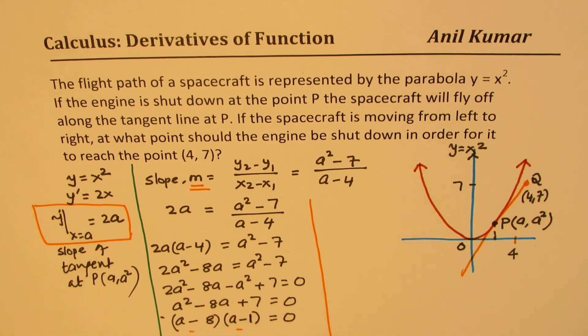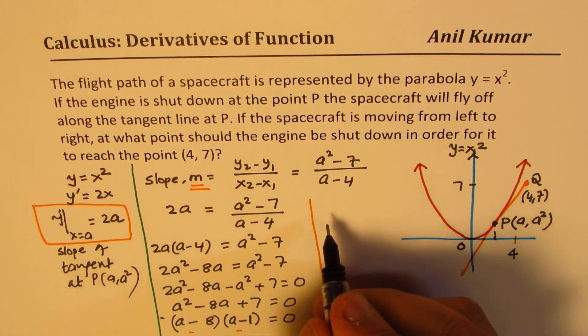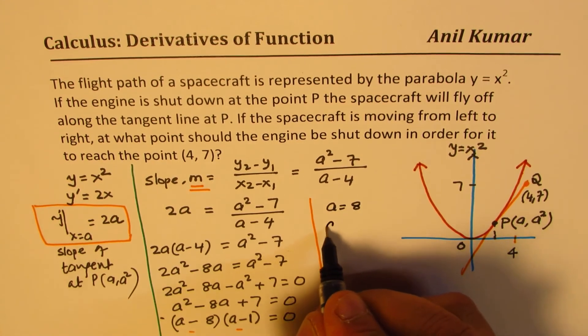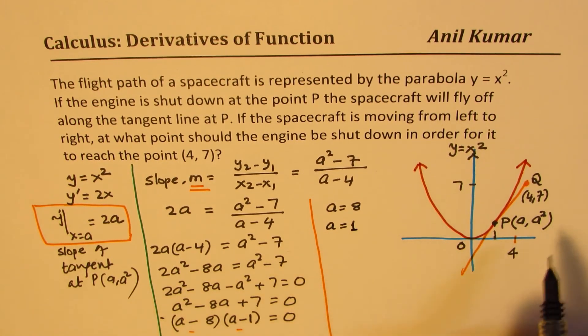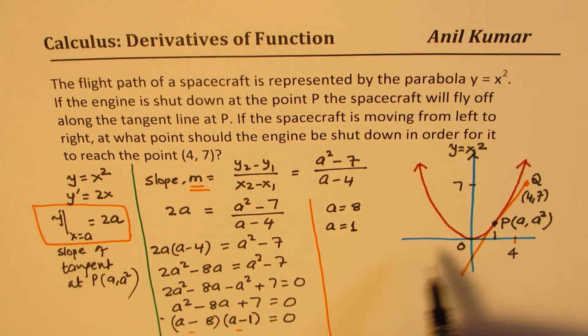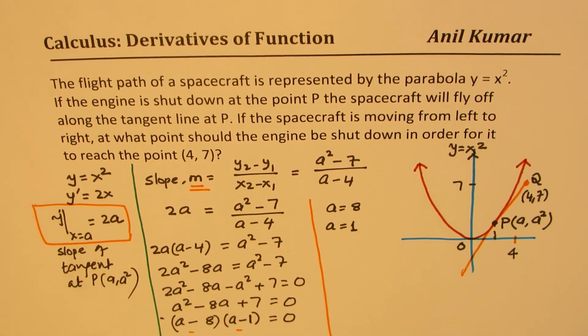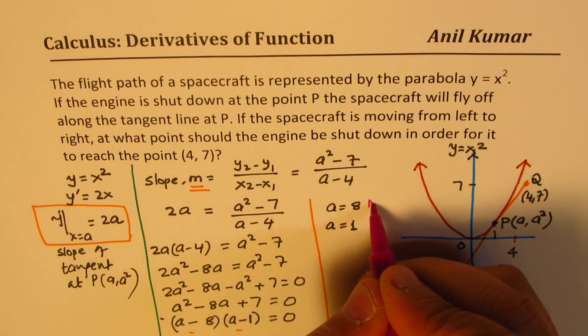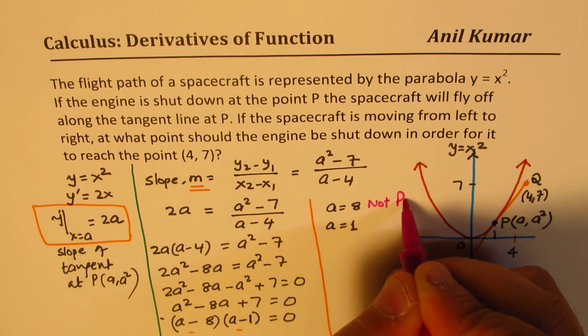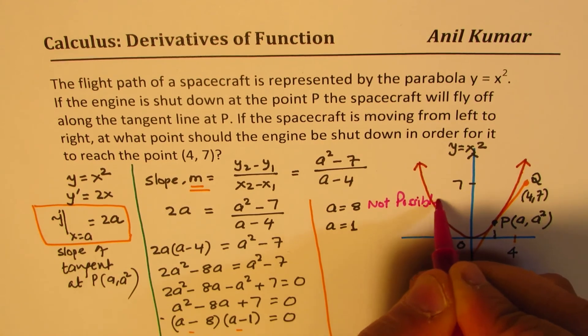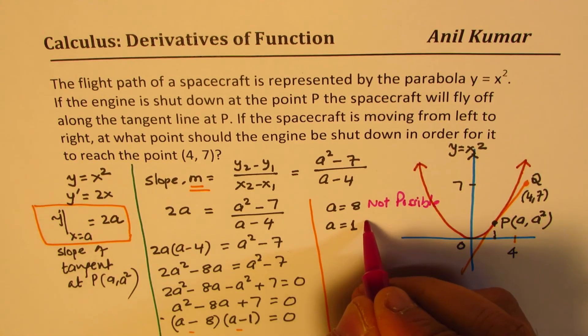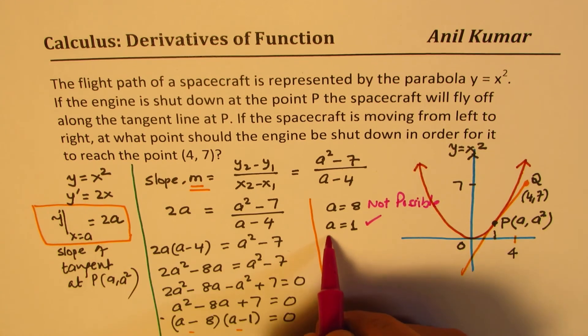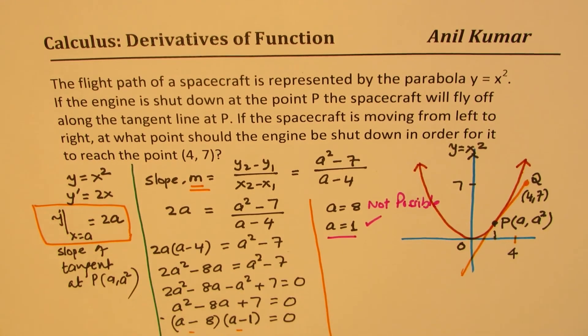For them to be 0, either a is equal to 8 or a is equal to 1. Since this point is before 4, it cannot be 8. So that is redundant. So a equals 8 is not possible. We are looking for a point before 4. So that seems to be OK. So a equals 1 is the right point.